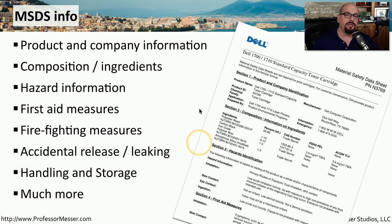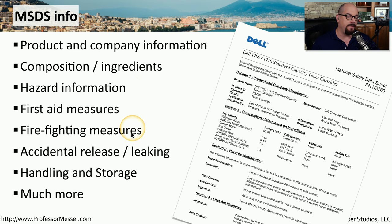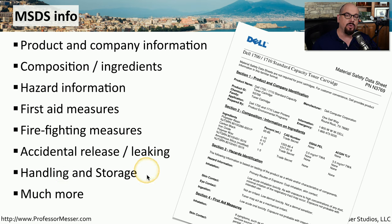Here's some of the detailed information you'll get from an MSDS: the product name and the company that manufactured the product, the composition and the ingredients inside the product, a breakdown of the hazard information so you know how this will affect a human if it comes in contact with this device, first aid measures, firefighting measures, information about accidental release or leaking, how you would handle it, how you would store it, and many more details.